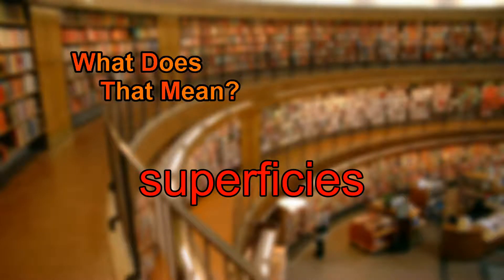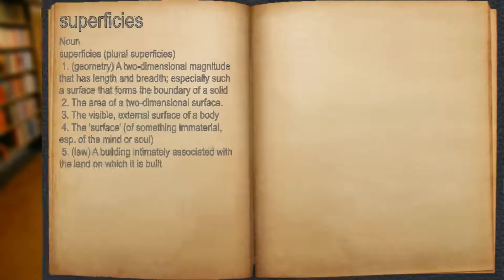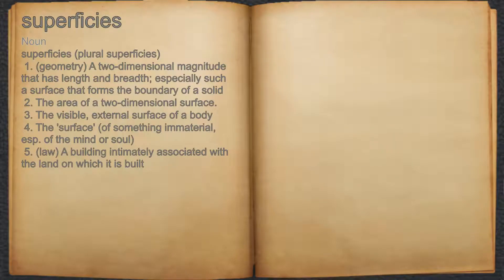What does superficies mean? Superficies. Noun. 1. Geometry: a two-dimensional magnitude that has length and breadth, especially such a surface that forms the boundary of a solid.